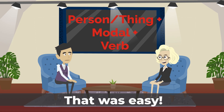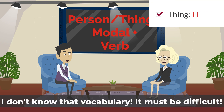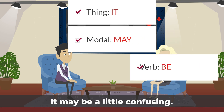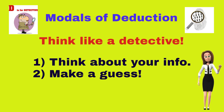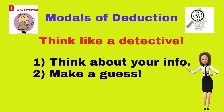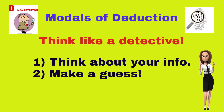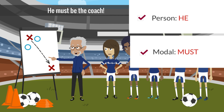That was easy. Another time that we use modals is for deduction. I don't know that vocabulary. It must be difficult. It may be a little confusing. With modals of deduction, we have to think like a detective. Think about the information that you have, and then make a guess based on your information. He is on the field. He is with the players. He is explaining something. He must be the coach.